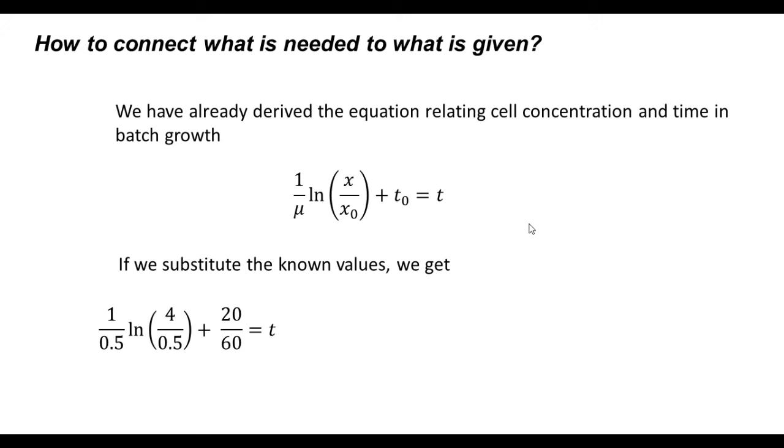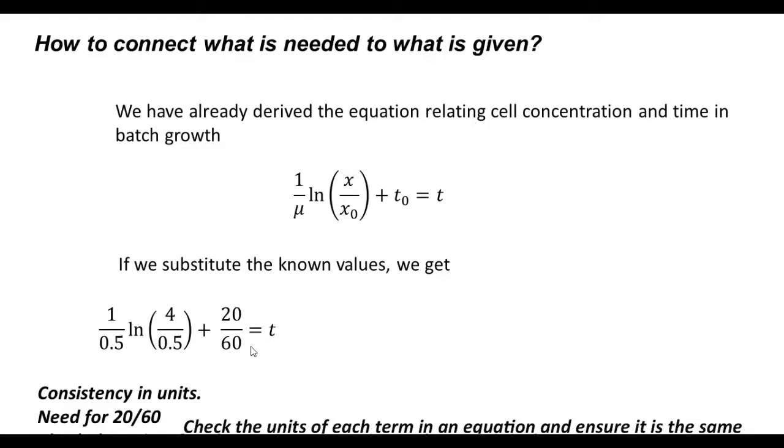20 minutes by 60 minutes per hour is one-third hour. That equals the time that is required. We have checked for the consistency in units, each term having the same system of units. And the need for 20 by 60 we saw. It is always good to check the units of each term in an equation and ensure that it is the same.